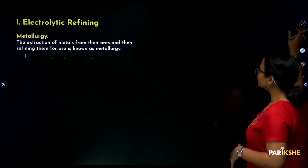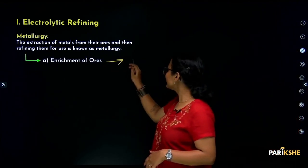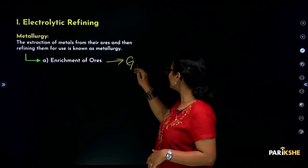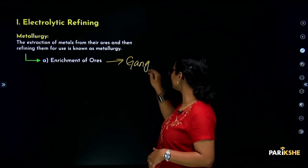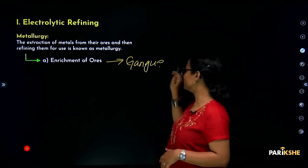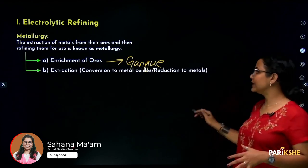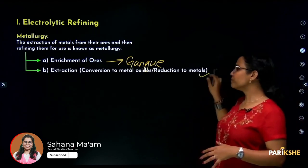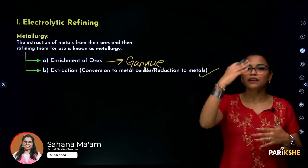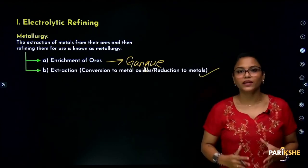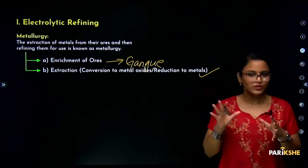The first step is Enrichment of Ores — we separate the gangue impurities from the ores. Next is extraction of metals, where we talk about metals according to the reactivity series.